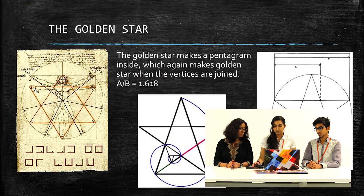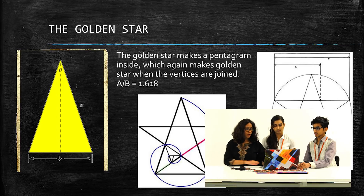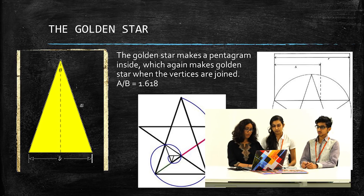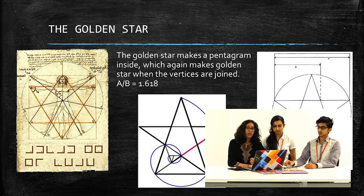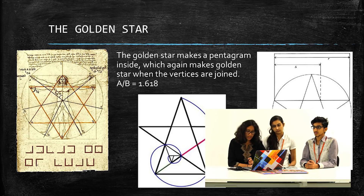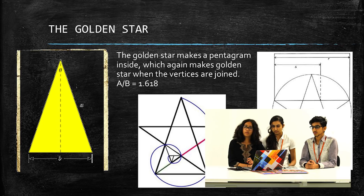The golden candle is basically obtained from the golden star. The golden star is obtained from the Vitruvian man. If we join the points in the Vitruvian man we get the golden star, and if we connect the points in the golden star we get the golden spiral. The ratio of R to S is in golden ratio.